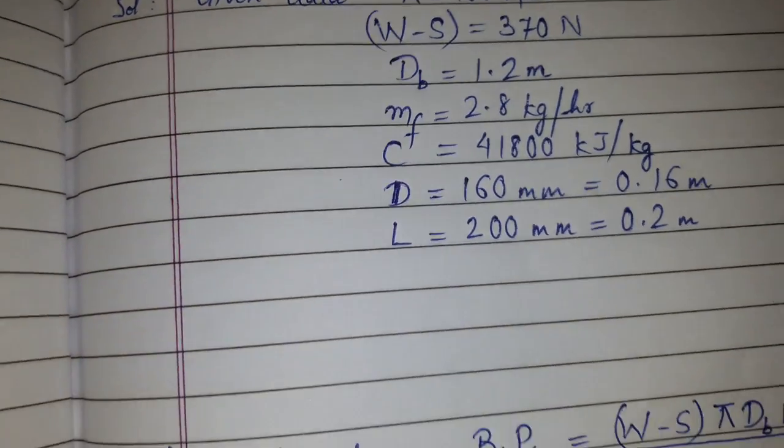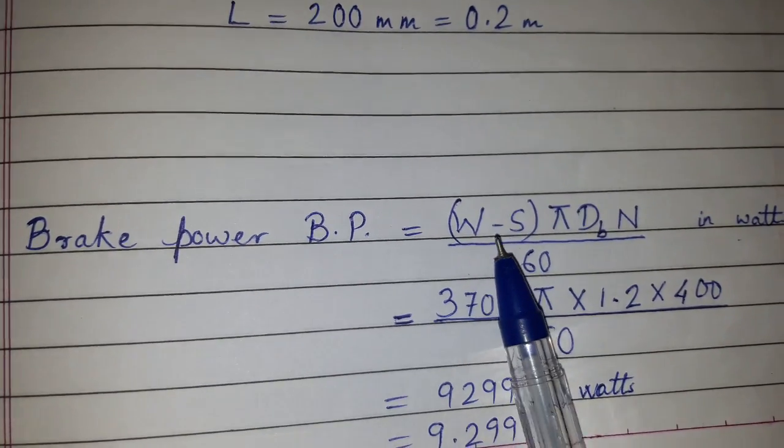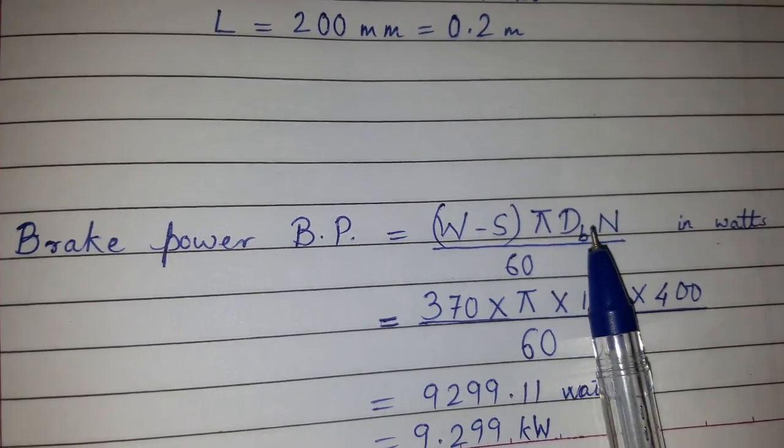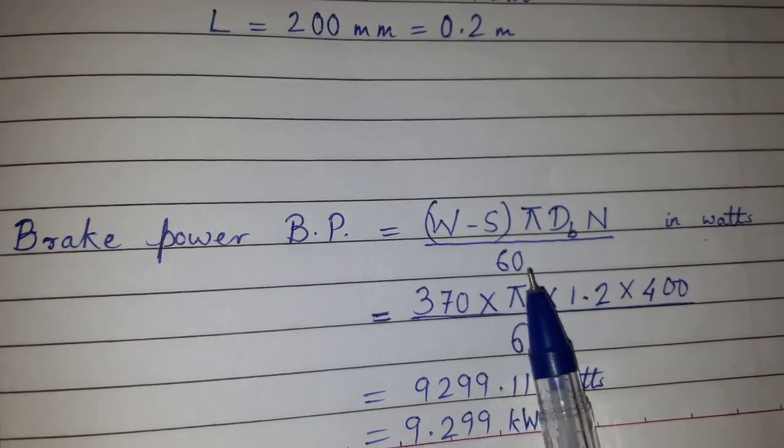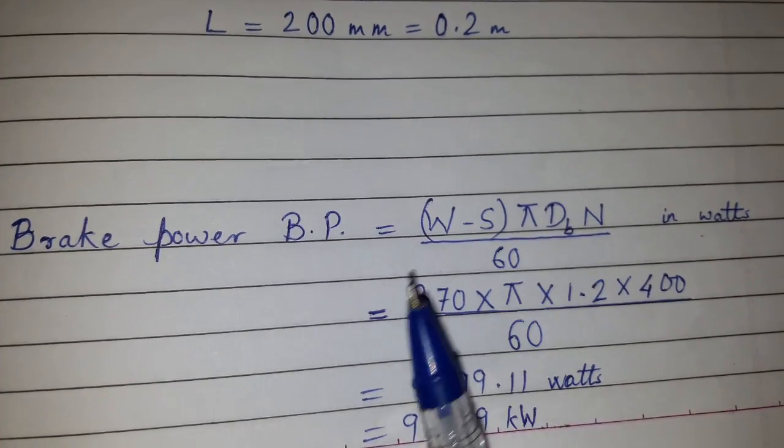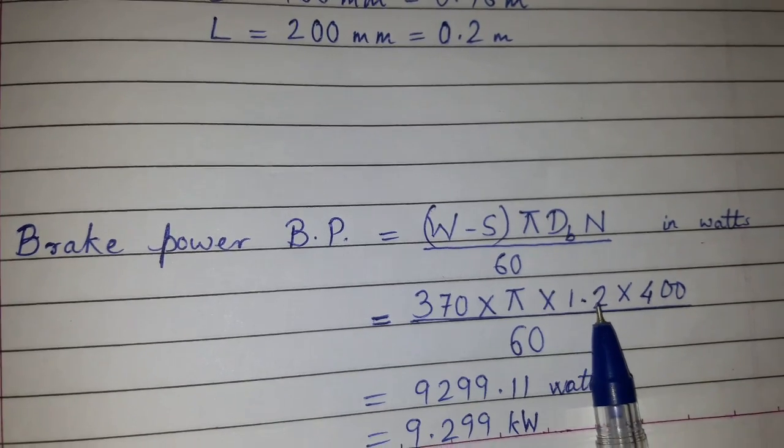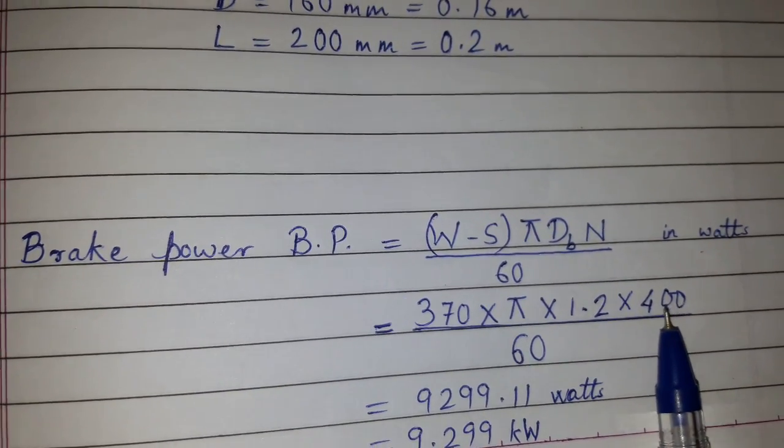Now we need to calculate brake power. The formula for the brake power is (W - S) × π × DB × N / 60. So here W - S is already given, that is 370. π, DB is given as 1.2 meter. N is given, that is 400 rpm.